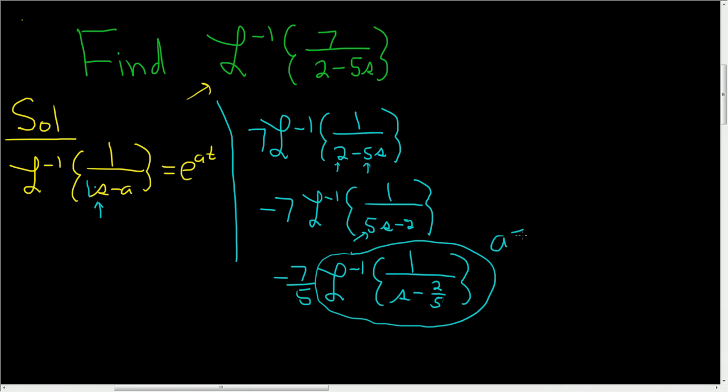In this case, a is equal to 2 fifths. It's s minus a, so a is 2 fifths. So the final answer is negative 7 fifths e to the 2 fifths t. And that is the final answer.